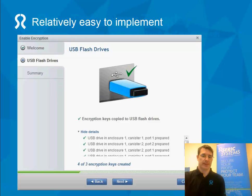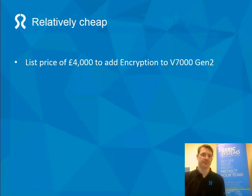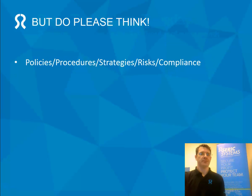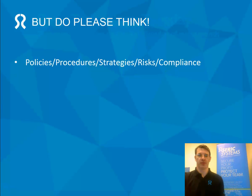Implementation is relatively straightforward — there's an excellent wizard and command-line interface. You put the USB keys in, it validates the keys, and it kicks off from there. It's relatively cheap — roughly around a thousand pounds to add encryption. However, you do need to think carefully about policies, procedures, strategies, risk, and compliance. Security isn't a point solution and encryption isn't something you just switch on. You need a policy for backing up those keys and keeping them safe, because if you lose those keys you cannot access your data. Game over.